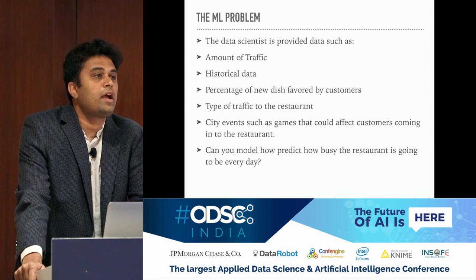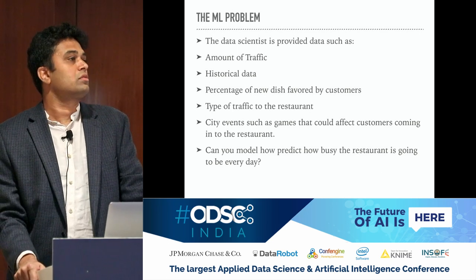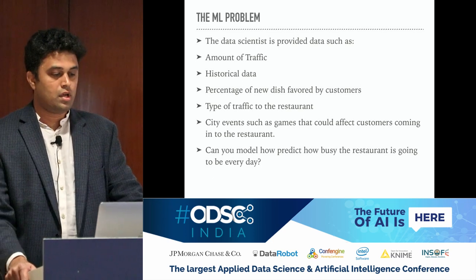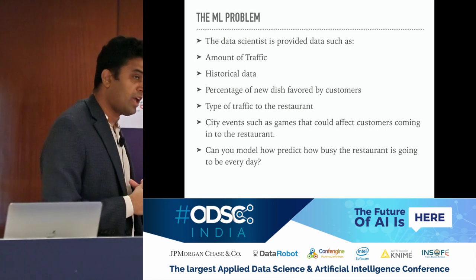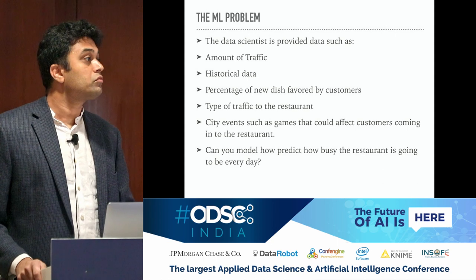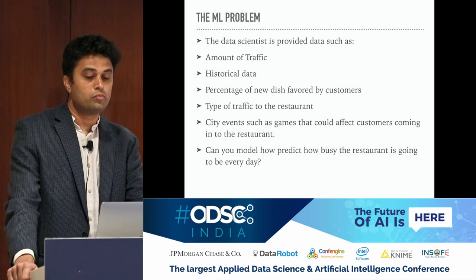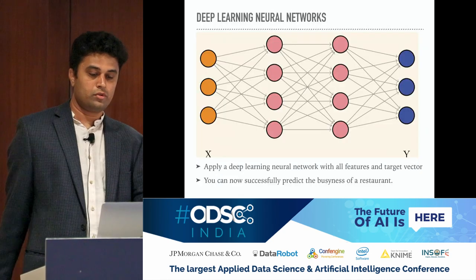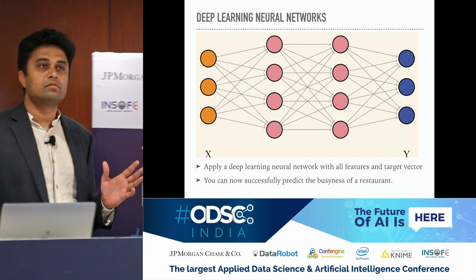You want to find out how good the dish is that is actually causing the traffic, and the reason why people are happy. So how would you solve it? The head of the restaurant would call in a machine learning engineer or data scientist and say: I have this problem, can you measure it? I want to find out why, not just get predictions. Everybody wants predictions, but along with that we want to know why. The data a data scientist would demand: amount of traffic, historical data sets, anything useful in modeling, including things you do not know but have data for. This can include type of traffic, city events such as games. Can you model how busy the restaurant will be?